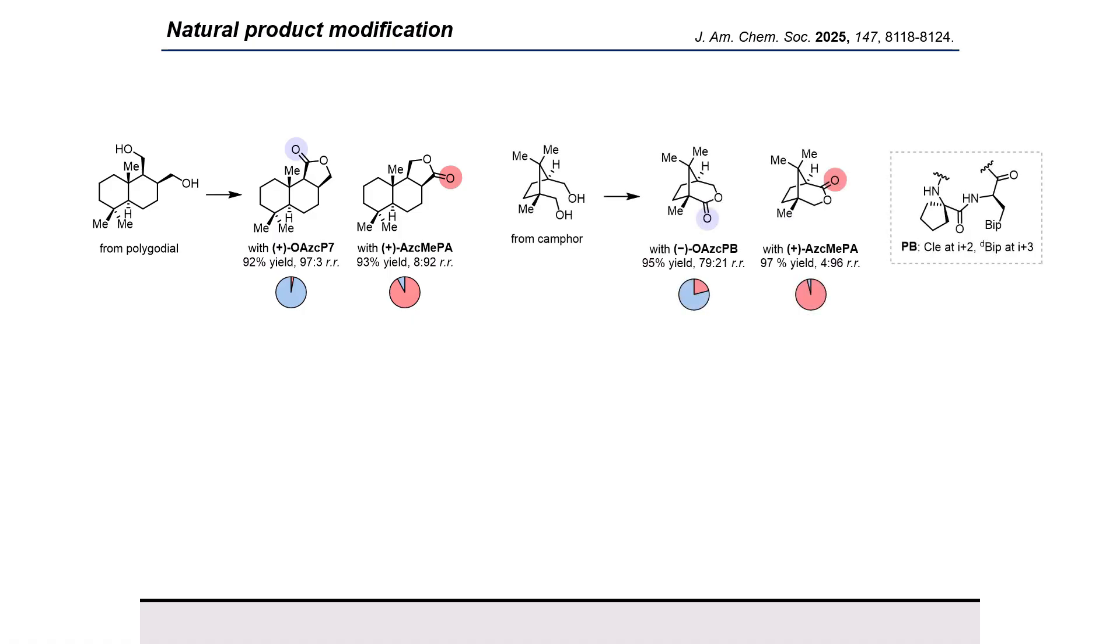For this challenging camphor-derived 1,6 diol, we had initially achieved 70% selectivity for the more hindered site using peptide P7. We further improved the selectivity to 79% by making slight modifications to the peptide backbone, highlighting the modularity of these catalysts for further substrate-specific improvements when desired.